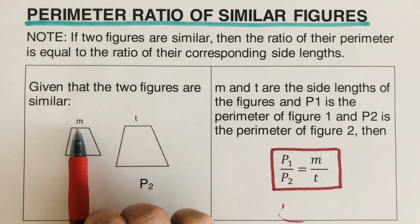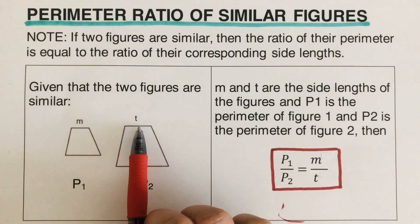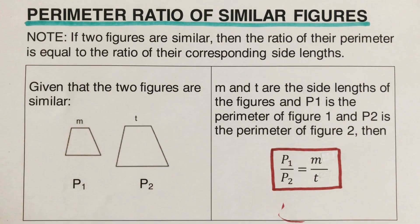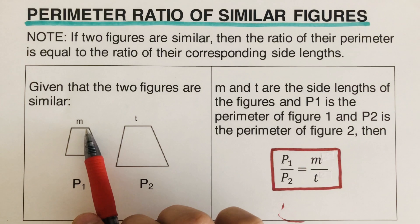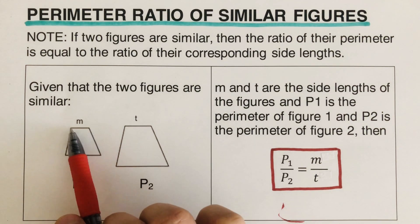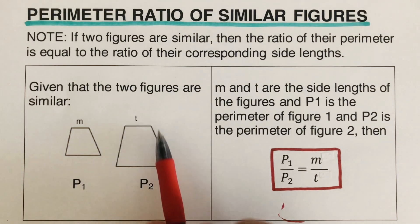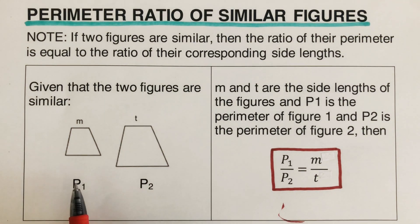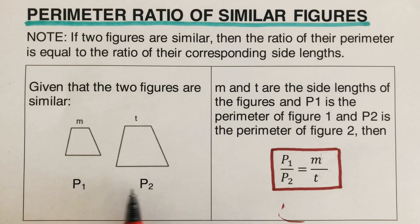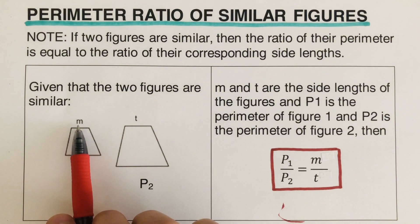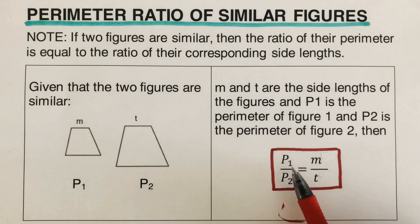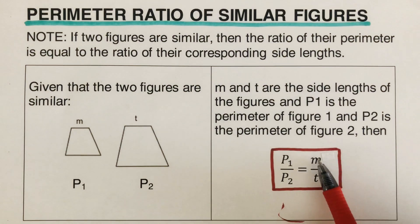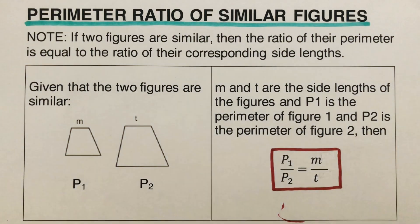Side length M is corresponding to side T, so these two are corresponding. The word parameter, represented as P, means the distance around a figure — if you add all the lengths of all the sides, that's the parameter. So the ratio of the two parameters is equal to the ratio of their corresponding side lengths. That's how I got the formula: P1 over P2 equals side length M over side length T.